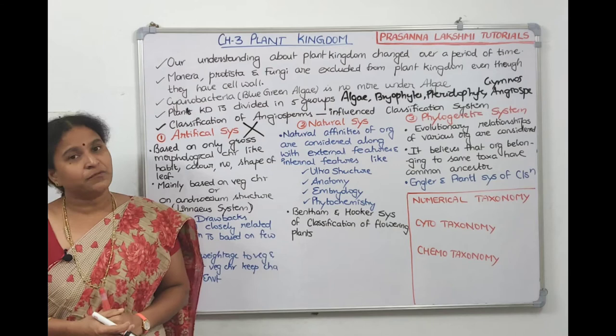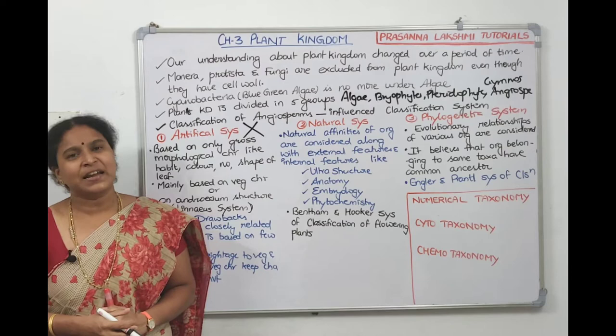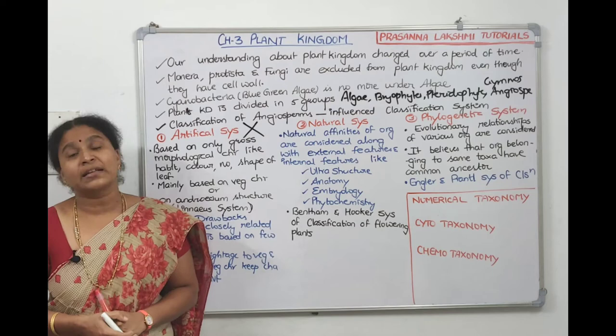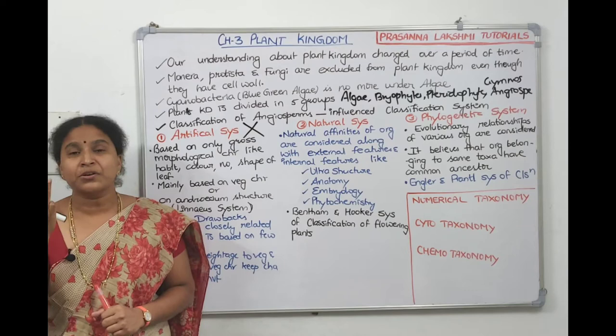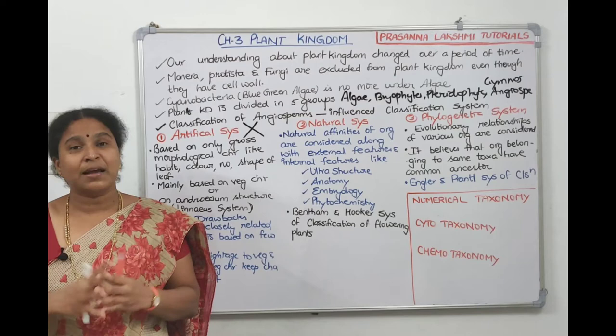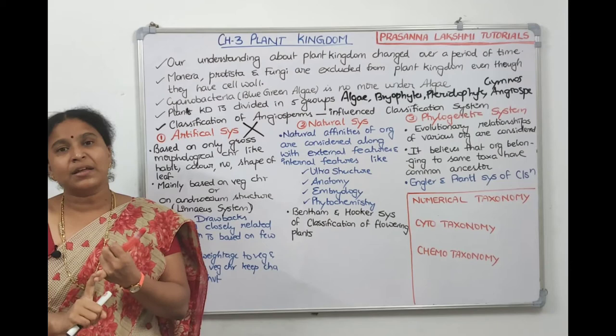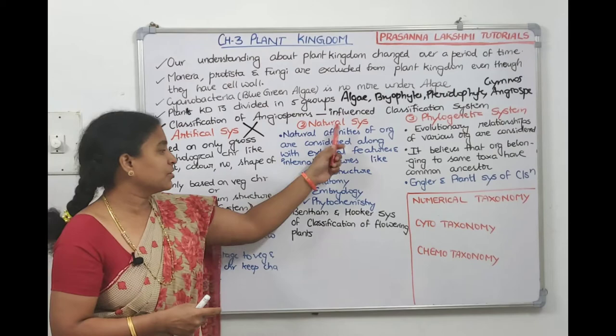Natural system of classification takes natural affinities of organisms into consideration. Along with natural affinity, internal structure (anatomy), external structure (morphology), embryology, and phytochemistry/biochemistry are also considered. When all these factors are taken together with the natural attractions among organisms, it becomes the natural system of classification.